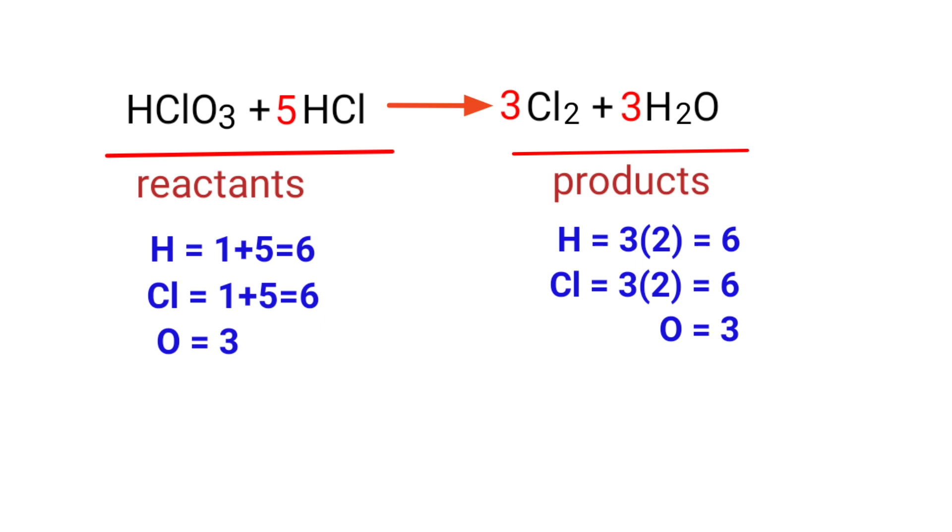The equation is now balanced. There are 6 Hydrogen Atoms, 6 Chlorine Atoms and 3 Oxygen Atoms on both sides.